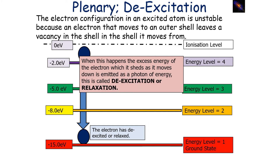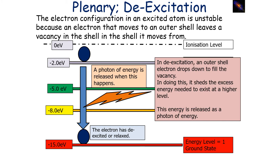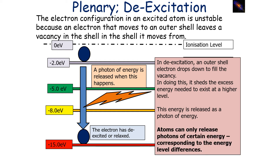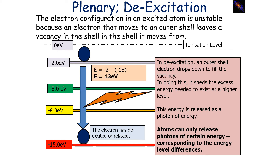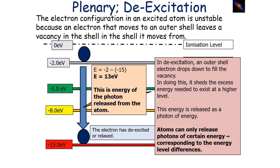This is also the concept of entropy, and why in chemistry you learn that electrons fill certain shells first — it's more energetically favourable. When an electron moves down the energy levels, or de-excites, the excess energy is emitted as a photon. In de-excitation, an outer shell electron drops down to fill a vacancy in an inner shell, shedding the excess energy needed to exist at the higher level. This energy is released as a photon. It's important to note that atoms can only release photons of certain energies, corresponding to the energy level differences between levels in that atom. For example, going from 2 eV to 15 eV means 13 eV — the difference between the two — is released as a photon.